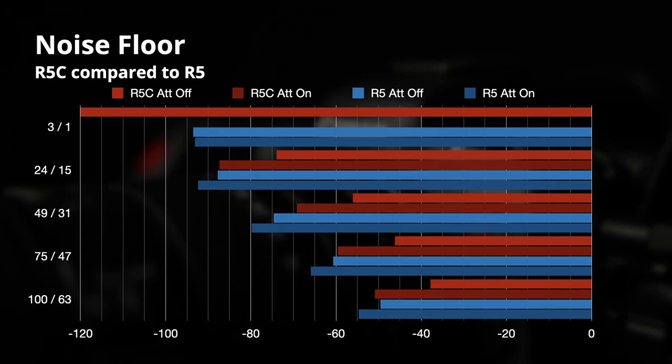So this is a chart of the values or the noise floors that I measured. The red bars are for the R5C. The blue bars are for the R5. The brighter colored bars are with the attenuator off on the internal attenuator in the camera. The darker colored bars are for the attenuator on. And I'm not going to go through all of the details here, but you should pretty quickly observe that for the vast majority of cases, the R5C has an appreciably higher noise floor than the R5 does for similar settings.